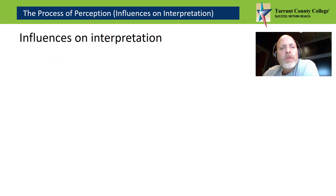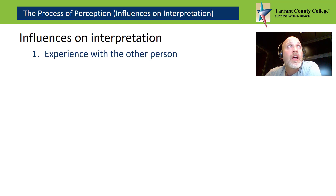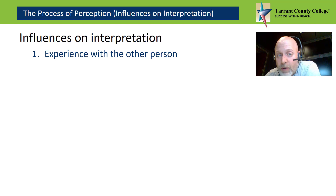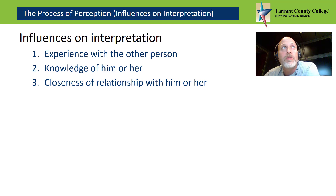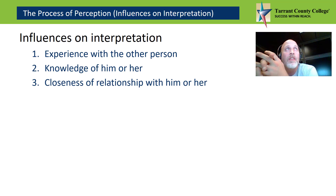Now, what are some of the influences on our interpretation? What influences what we interpret is the experiences we've had in the past or expect to have going forward with the other person, what we know about the other person, and the closeness of the relationship with the person. These three things, when taken together, have dramatic influence in terms of how we interpret our relationship and our process of interpreting information from that other person.